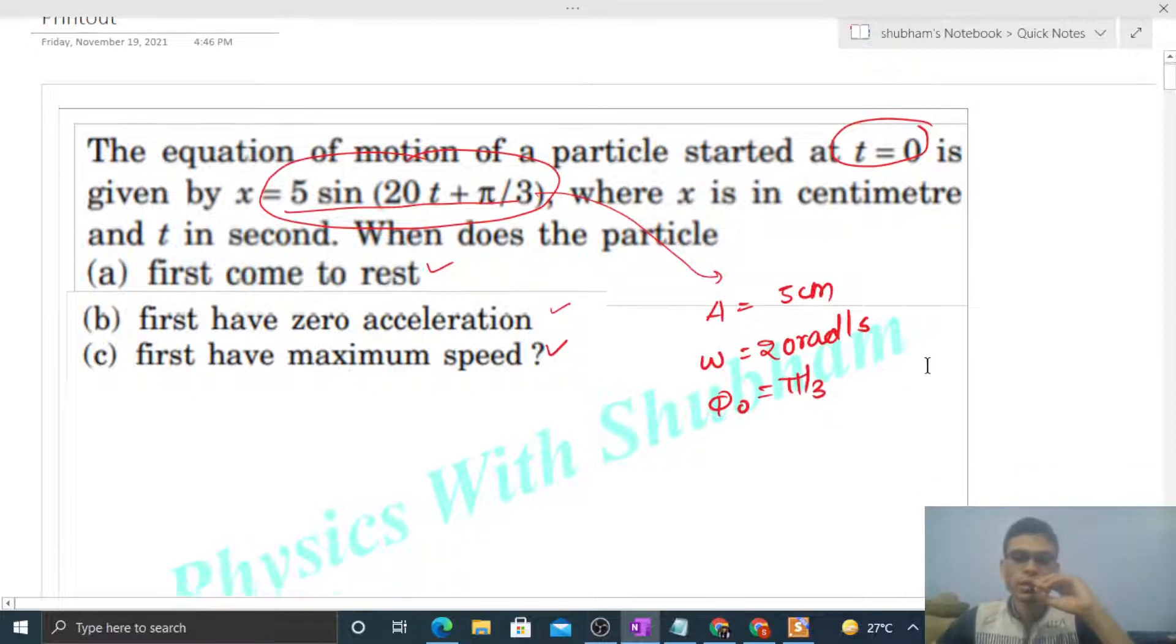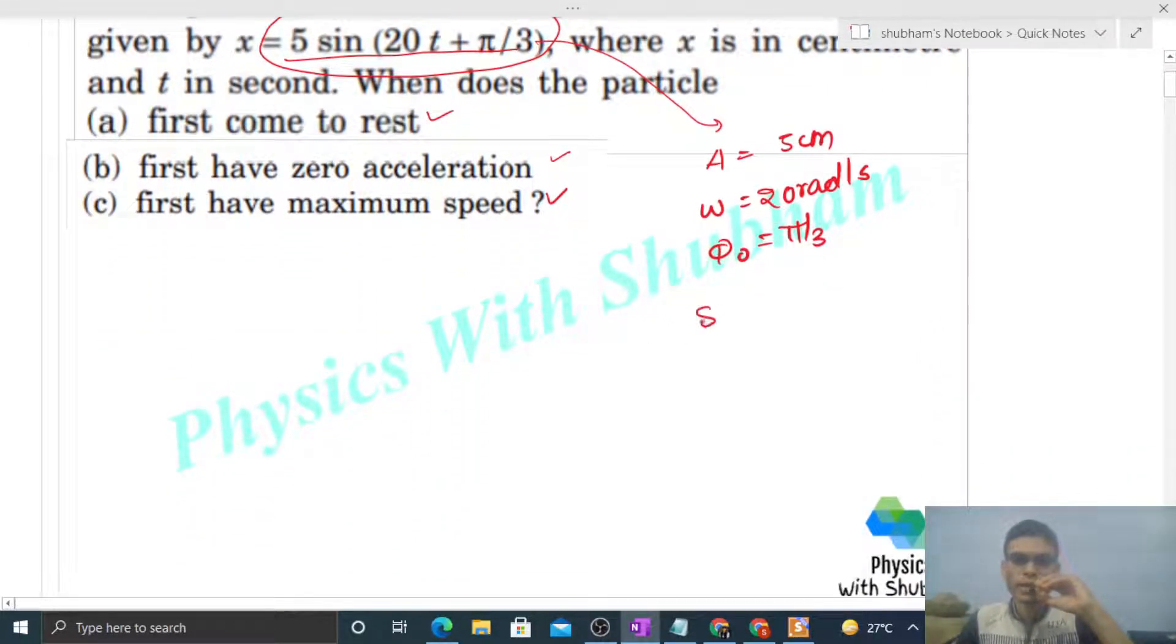Now if we relate SHM to uniform circular motion, many SHM problems become quite simple. If a particle does uniform circular motion, then its projection will do SHM. So for this SHM, let's look at the uniform circular motion approach.